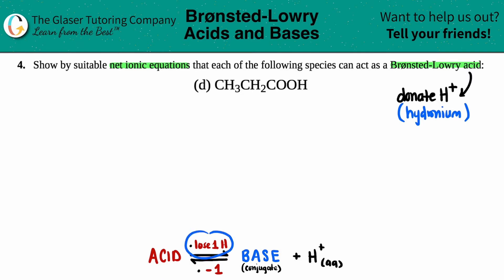One, it's got to lose one H because it's donating an H. So if you donate something, you lose it, right? And then because of that, it's always going to be a minus one charge from the original acid. So I'll show you what I mean by that.